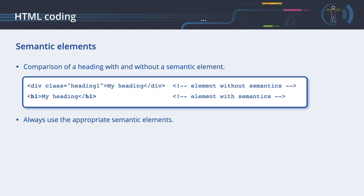Let's compare a heading with and without a semantic element. Both lines may be visually rendered in the same way. The first line creates a line formatted with a style sheet — a screen reader has no possibility to detect that this line describes a heading. The second line describes a heading by its semantic element, which can be detected by a screen reader. So please always use the appropriate semantic elements to describe the structure of your document. Never use a non-semantic element to replace it.